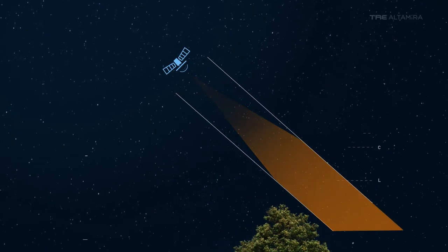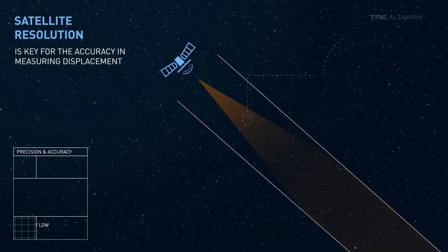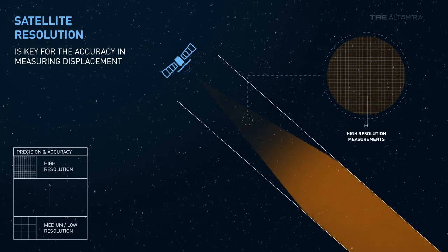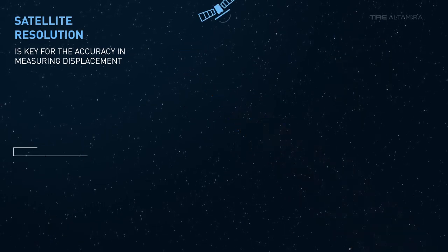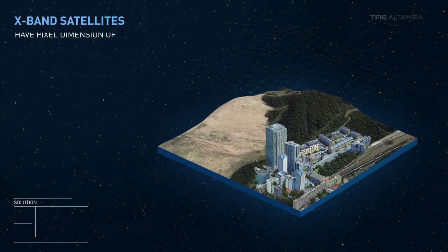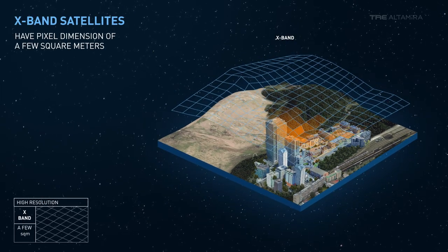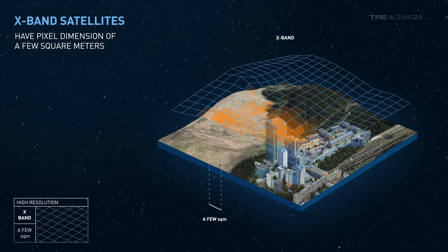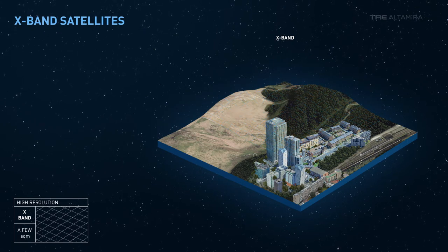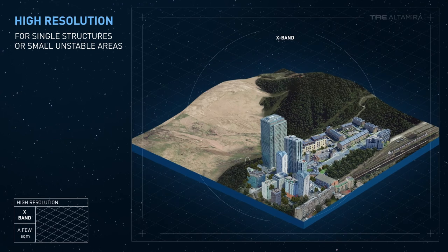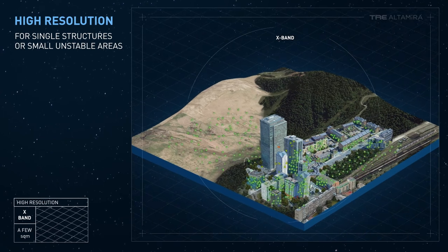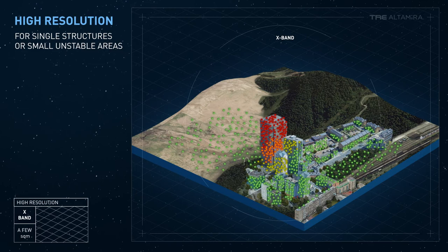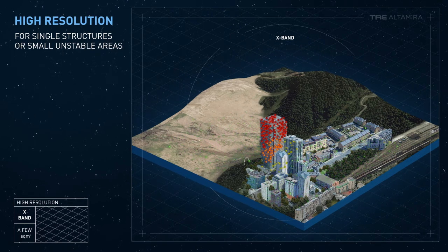Image resolution is a key feature for InSAR. The higher the resolution, the more precise and accurate the geolocation of the measurement points. X-band satellites can easily reach a pixel size of a few square meters. Because of their sensitivity and high resolution acquisition modes, X-band sensors are the most suitable to detect movement of individual structures or spot small unstable areas.